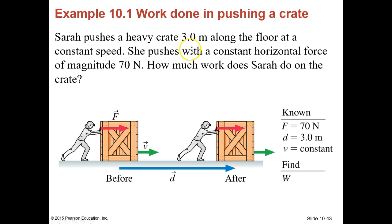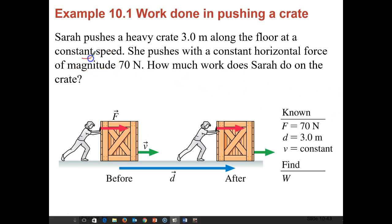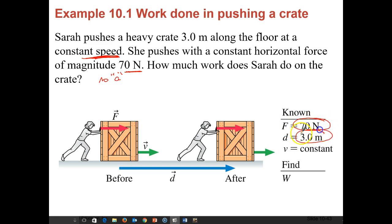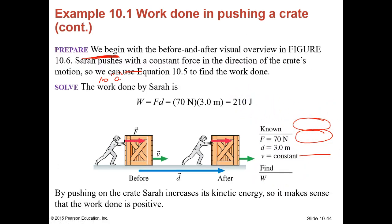Here's our first example. We have Sarah pushing a heavy crate 3 meters along a floor at a constant speed. Notice that the speed is constant — there is no acceleration. She pushes with a constant horizontal force of 70 newtons. How much work does Sarah do on the crate? We know that it's a 70-newton force, the distance is 3 meters, and the speed is constant. We need to find the work.